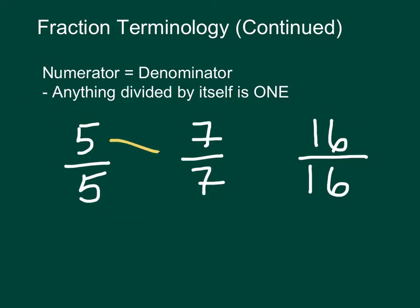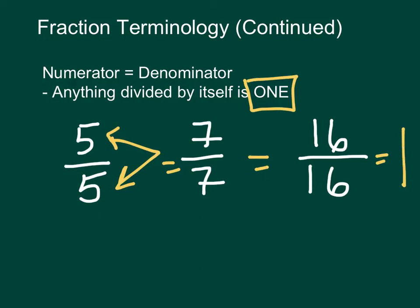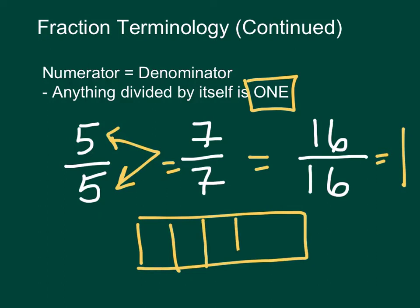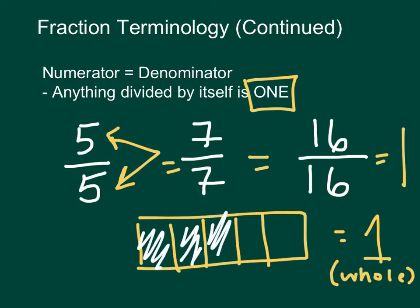If our numerator is actually equal to our denominator, this fraction is going to equal one. This is very important because anything divided by itself is always one. For example, five-fifths, seven-sevenths, and sixteen-sixteenths are all equal to one — so these are all equal to each other, equal to one. For example, if I divide a whole into five pieces and I take all five pieces, we can see I'm going to end up with a whole, or with one.